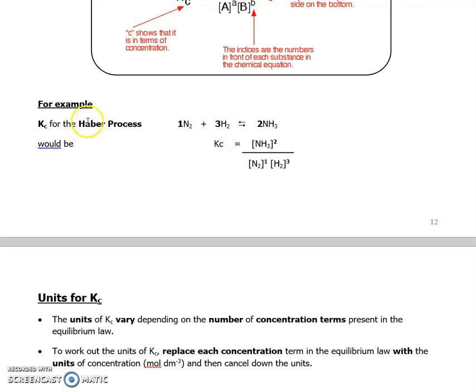So an example will be this. If you had the Haber process, one mole of nitrogen plus three moles of hydrogen in equilibrium with two moles of ammonia, the equilibrium constant would be given by the concentration of ammonia squared, so it comes from here, divided by the concentration of nitrogen to the power of one, multiplied by the concentration of hydrogen to the power of three.